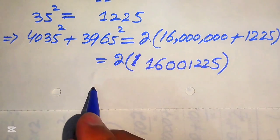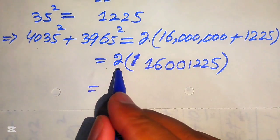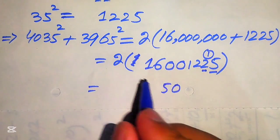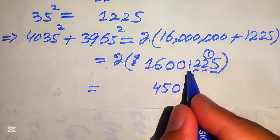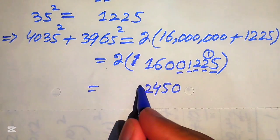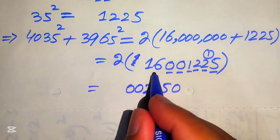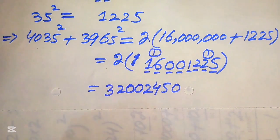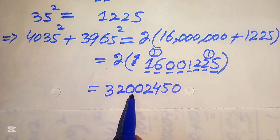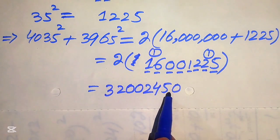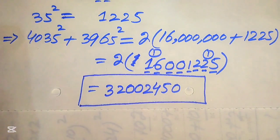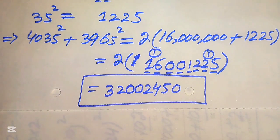In the final step we multiply 2 by 16,001,225: 2 × 5 = 10 write 0 carry 1; 2 × 2 = 4 plus 1 = 5; 2 × 2 = 4; 2 × 1 = 2; 2 × 0 = 0; 2 × 0 = 0; 2 × 6 = 12 write 2 carry 1; 2 × 1 = 2 plus 1 = 3. So we get 32,002,450. This is the final simplified answer. Thank you so much for watching this video — please subscribe to my channel for more exciting videos.